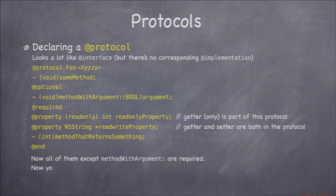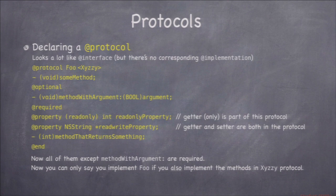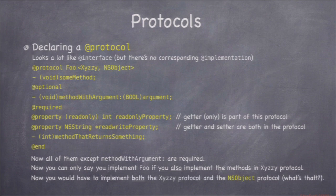You can put other protocol names in angle brackets after your @protocol declaration, like @protocol Foo with angle brackets X, Y, Z. That means if you want to say you implement protocol Foo, you also have to implement all the required methods of protocol X, Y, Z — it's kind of like a super protocol. You can have multiple ones, so a protocol can require you to implement both X, Y, Z and NSObject.